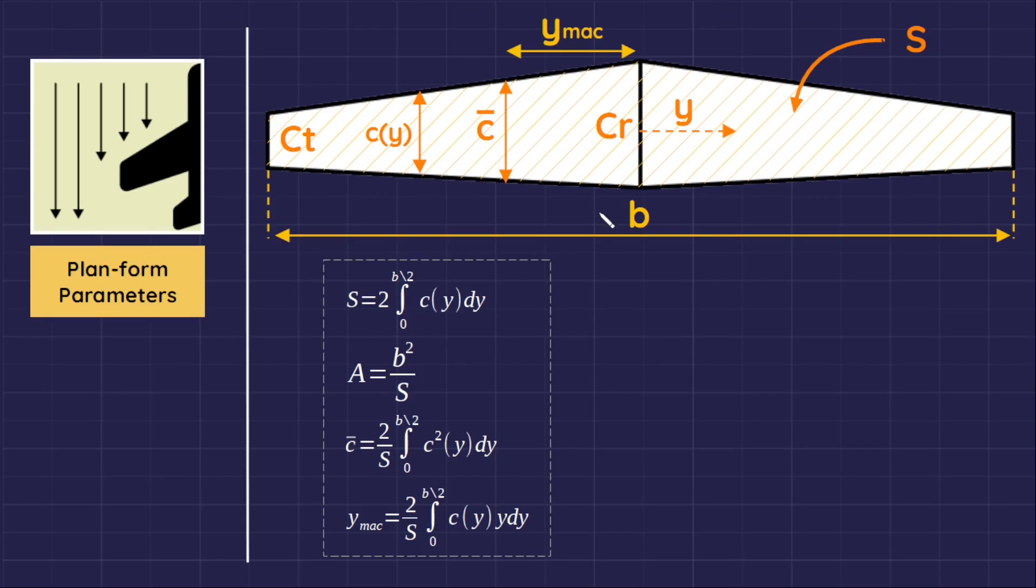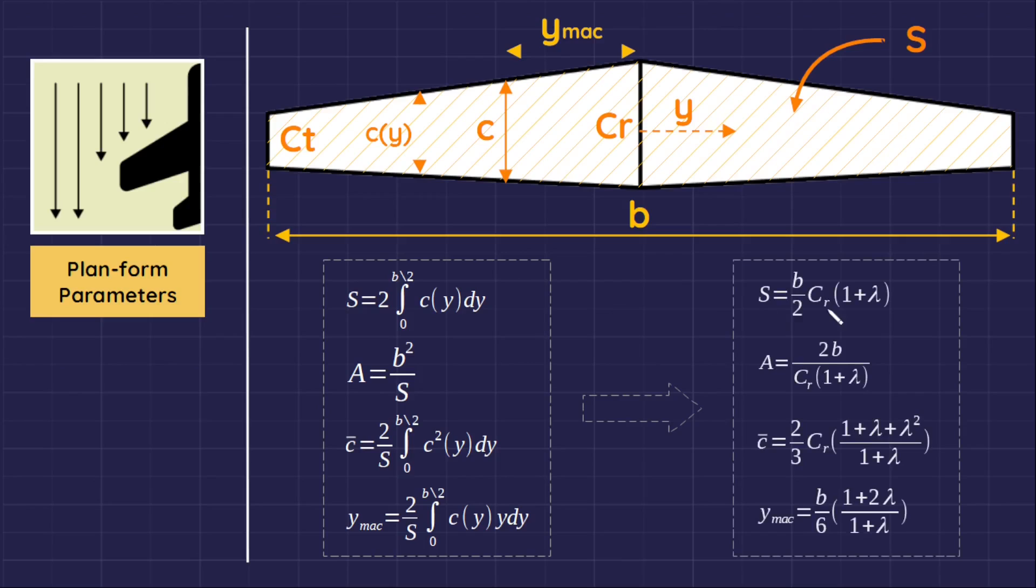For a conventional straight wing, the equations reduce to these equations. So the taper ratio is the main parameter used to calculate all other wing planform parameters, and these are the equations of trapezoidal wing.